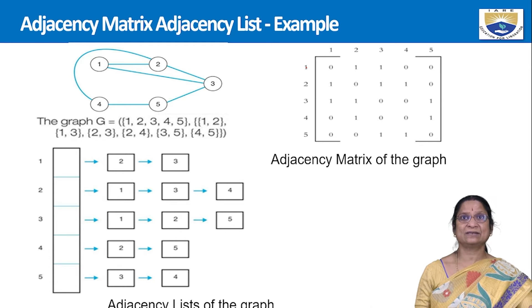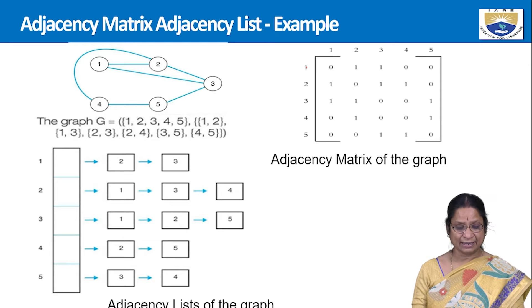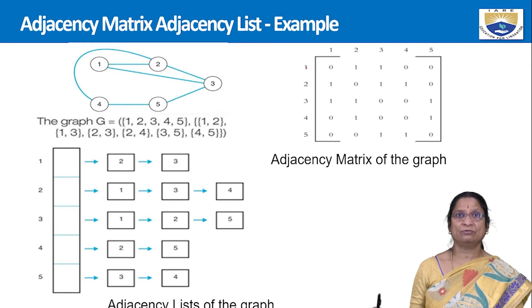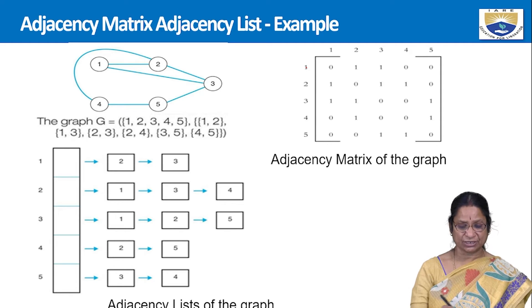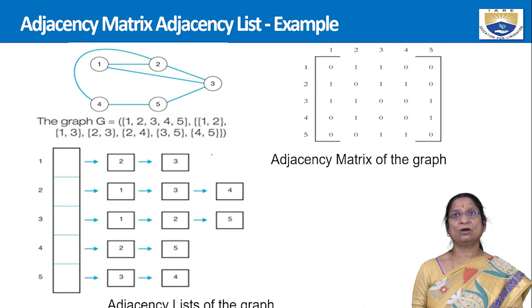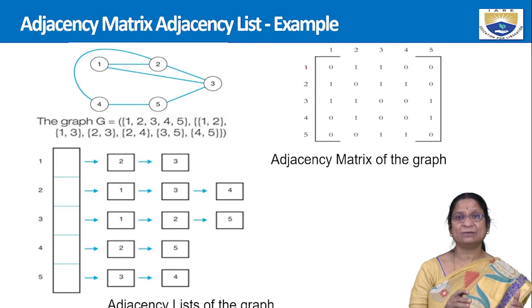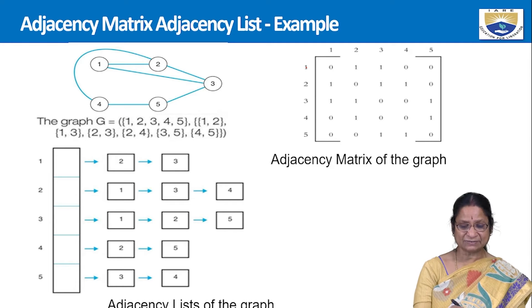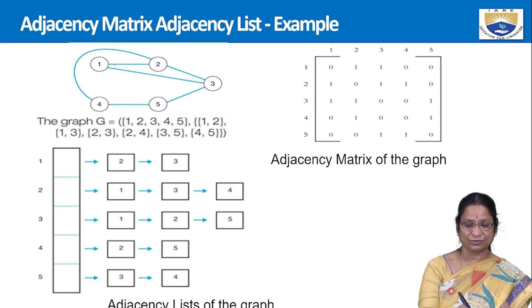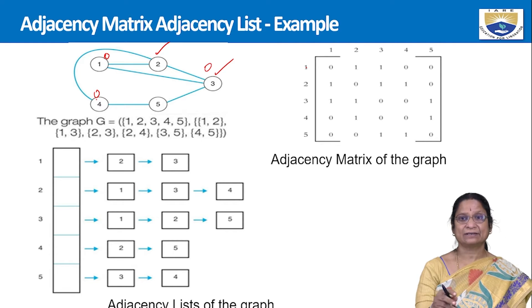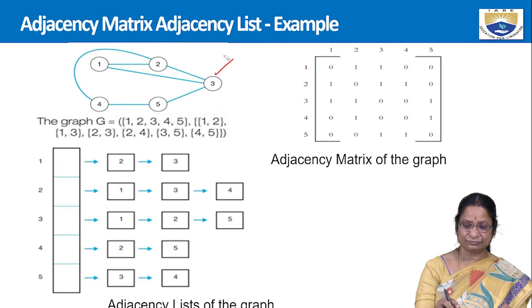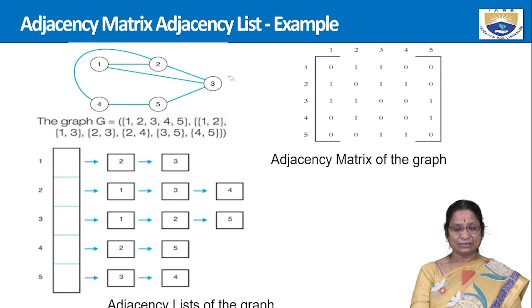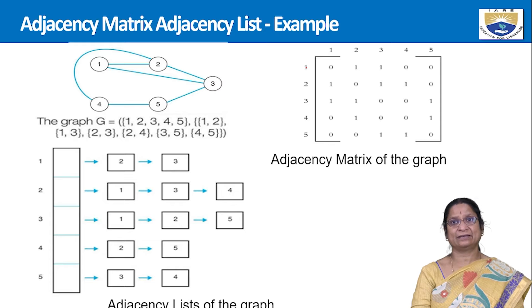Coming to adjacency list representation: the adjacency list has a single array of size n, where n is the number of vertices. From each index, we list all vertices adjacent to that particular vertex. Adjacent means all nodes connected with a direct edge — for vertex 1, nodes 2 and 3 are adjacent; for vertex 2, nodes 1, 3, and 4 are adjacent.